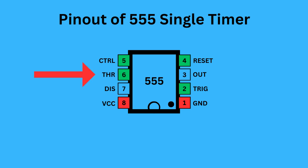Pin six is threshold. It monitors the voltage of the capacitor connected to the circuit. Pin seven is discharge. It controls the charge and discharge cycle of the timing capacitor. Pin eight is VCC. It is responsible for supplying the power to the IC.